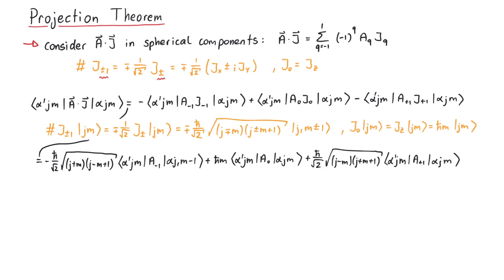Now, since all three of them contain the matrix element of one component of A, we can use the Wigner-Eckart theorem here again. Those matrix elements are given by a certain Clebsch-Gordan coefficient times the reduced matrix element of A.